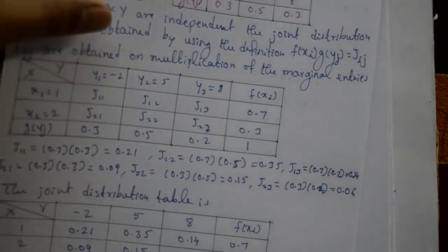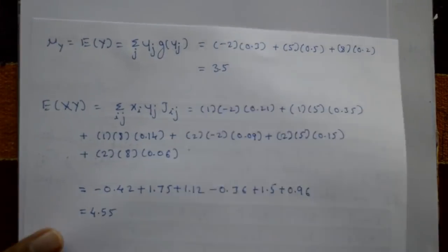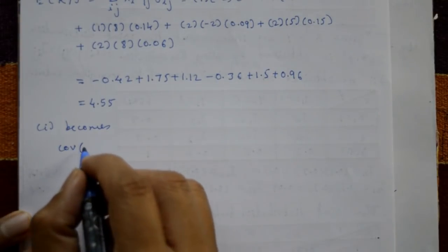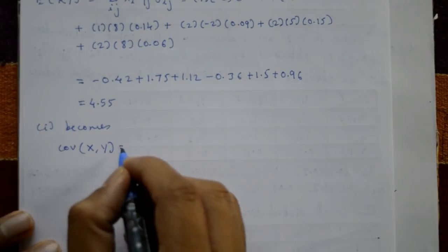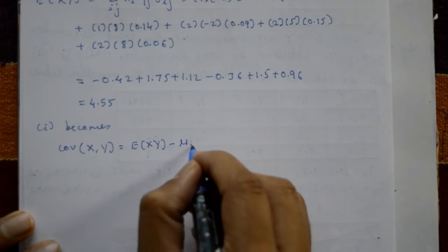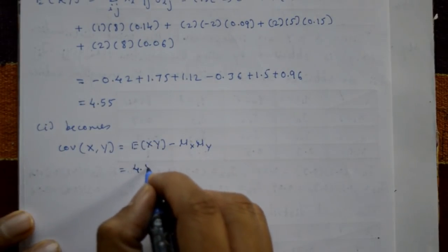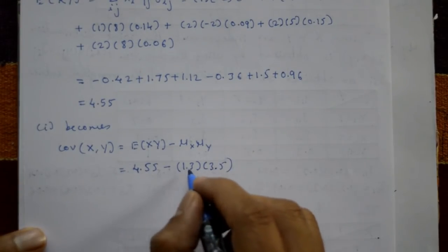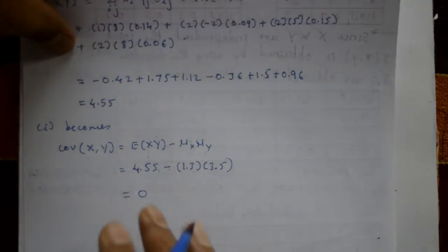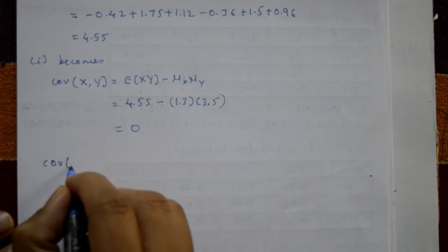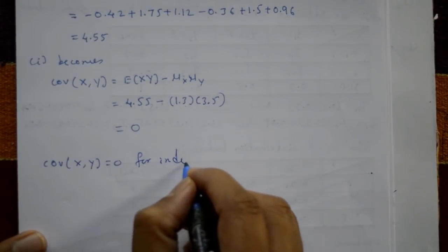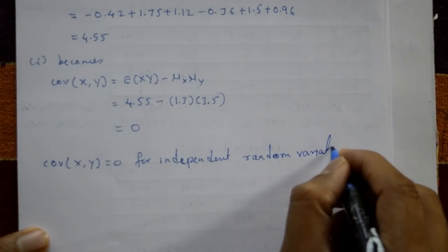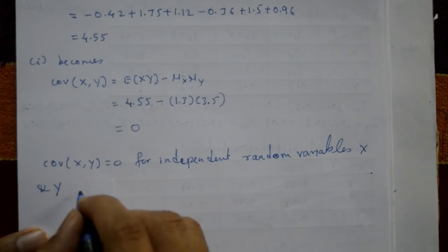Now applying the covariance formula: Cov(X,Y) = E[XY] minus mu_x × mu_y = 4.55 minus 1.3 × 3.5 = 4.55 minus 4.55 = 0. Therefore, covariance of X and Y equals 0, which verifies that for independent random variables X and Y, the covariance is zero.